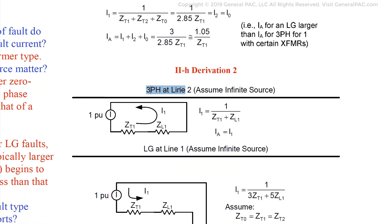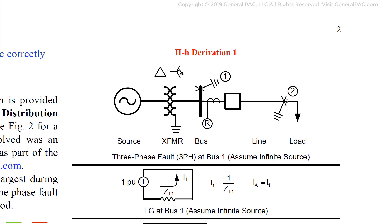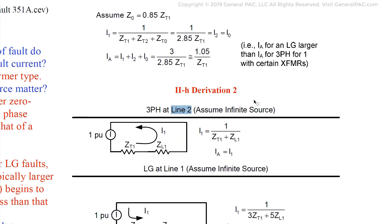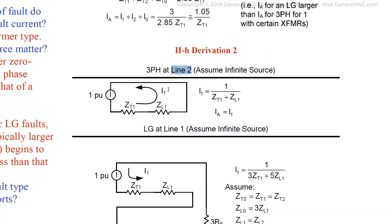Now let's place the same fault on the line. For a three-phase fault on line 2, we now have both transformer impedance and line impedance to consider. For positive sequence current, it equals the pre-fault voltage divided by the positive sequence transformer impedance plus the positive sequence line impedance. Line A current equals positive sequence current. We immediately see that the addition of line impedance reduces the three-phase fault current quantities.